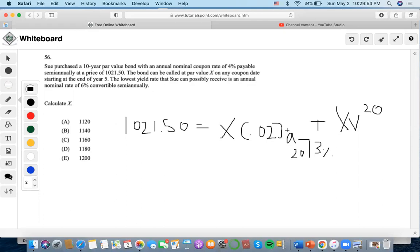You do 1 as payment, 20 as number of periods, 3 as interest rate, 0 future value, compute present value: 14.88. And 14.88 times 0.02 equals 0.2976.